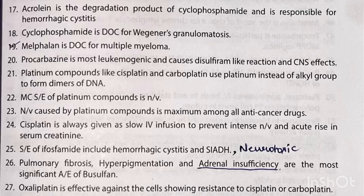Platinum compounds like cisplatin and carboplatin use platinum instead of an alkyl group to form DNA dimers. The most common side effect of platinum compounds is nausea and vomiting, which is maximum among all anti-cancer drugs. Cisplatin is always given as a slow IV infusion to prevent intense nausea and vomiting and an acute rise in serum creatinine.